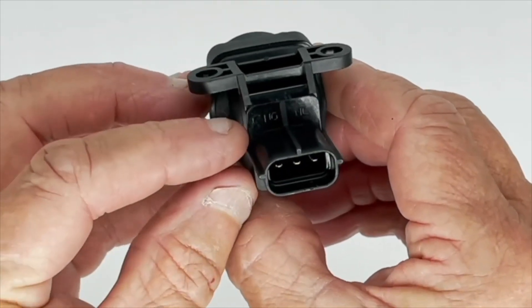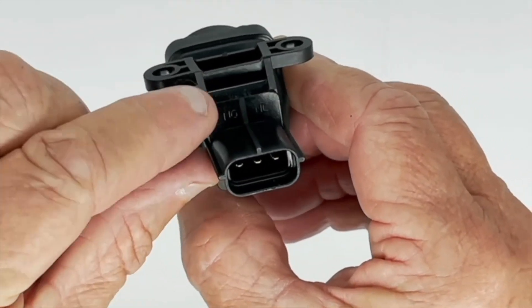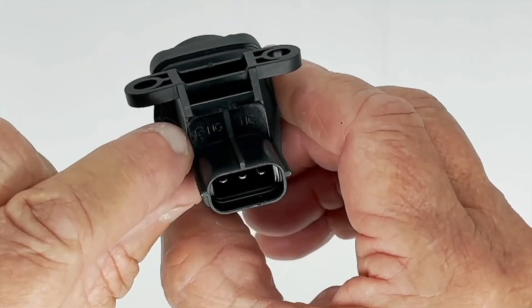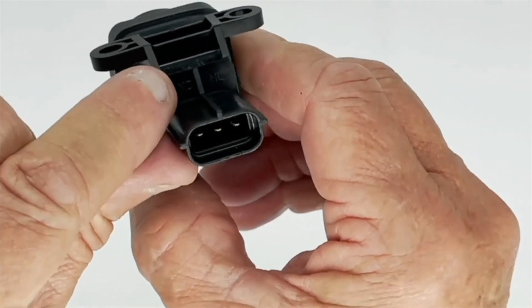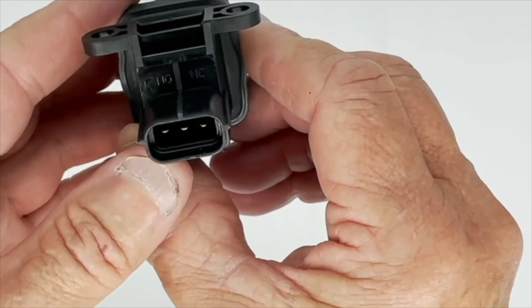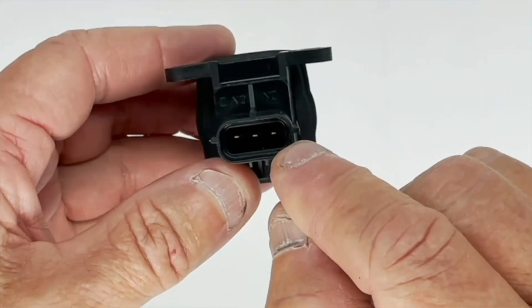You can just see some letters molded into the body of the plug: C, NO and NC. C is at this terminal on the end, it's the common terminal. NO is the one in the middle which is normally open, and NC is the one at this end, normally closed.